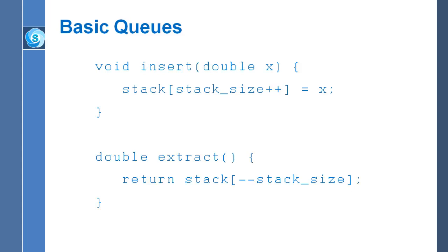The first thing the insert function does is copy x into the stack array at position stack_size, after which it increments stack_size. The first time this is called, stack_size is zero, so it copies the number into position zero — the beginning of the array. After putting the number into position zero, it increments stack_size to one, accurately remembering that there's exactly one number stored in the stack.